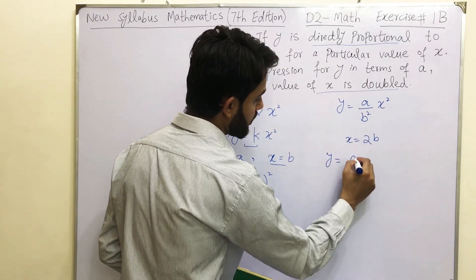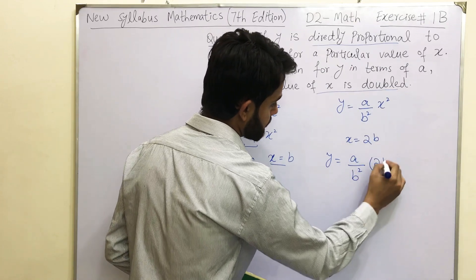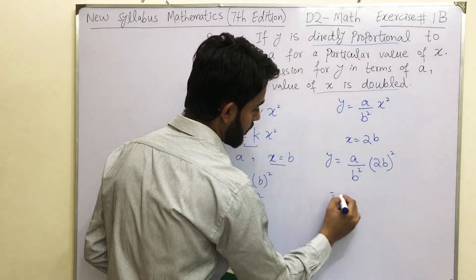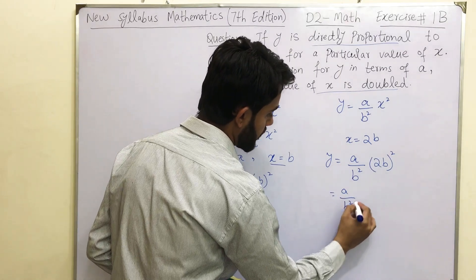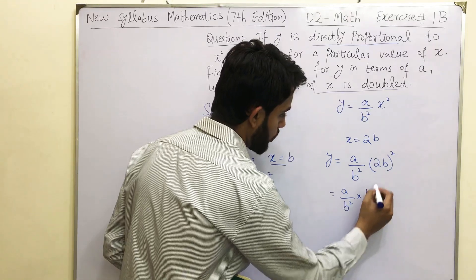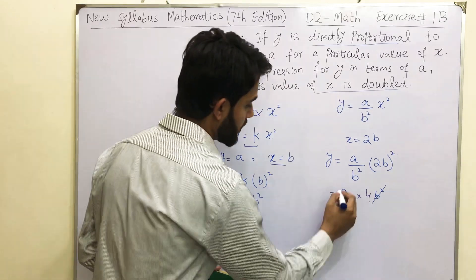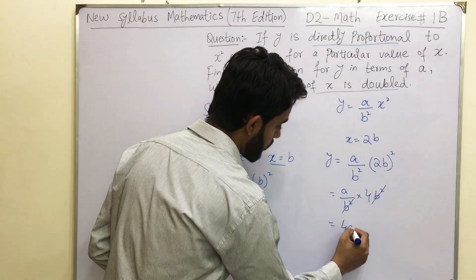We will get a over b square, and this x is 2b. A over b square, open this square. You will get 2 square will be 4, and b square will be b square. This b square and this b square will cancel. 4 times a will give you 4a.